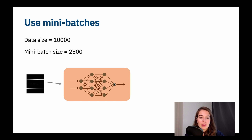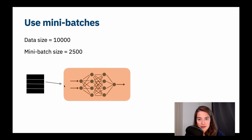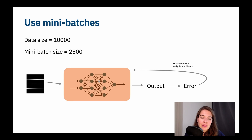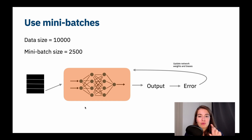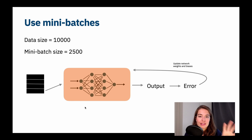Then we go to the next mini-batch and do the same thing on the already-updated network: run the 2,500 examples, calculate the output, calculate the error, update the network parameters. We repeat this for each subsequent mini-batch. Once we're done with the last mini-batch, that means we've completed one epoch — the network has seen the whole data set once.